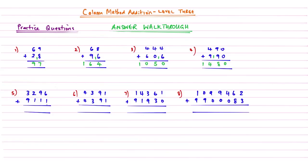Question 5: 6 add 1 is 7. 9 add 1 is 10 — carry the 1. 2 add 1 is 3, add the 1 there is 4. And then 3 add 9 gives me 12.